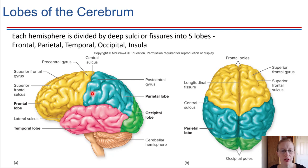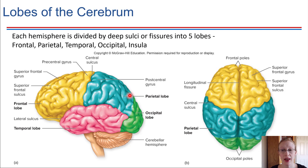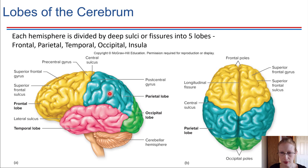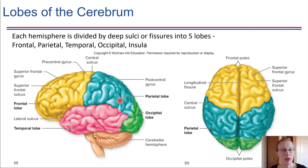Moving back a little further to the parietal lobe — in the back upper section of your brain — this is where a lot of our interpretation of sensory information happens. If you put your hand on something and sense a surface, that sensory input is being routed to this region. Certain regions in the parietal lobe are also where speech comprehension happens, as well as the ability to form words, speak to other people, and express thoughts, ideas, and emotions.